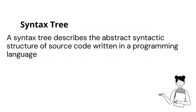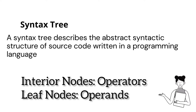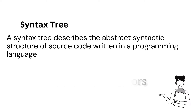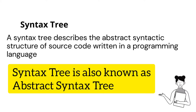A Syntax Tree is a source code representation called Abstract Syntactic Structure. We have to eliminate the extra information in the syntax tree. In the syntax tree, we have the Operators, Leaf Nodes, and Operands. When we have the Operators and Operands, there is extra information in the syntax tree. This reduced form is called the Abstract Syntax Tree.